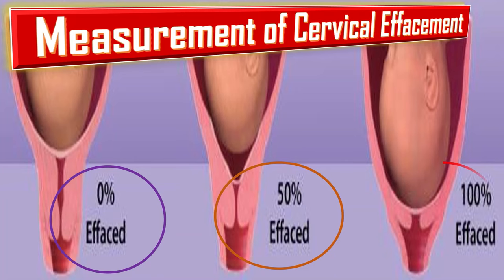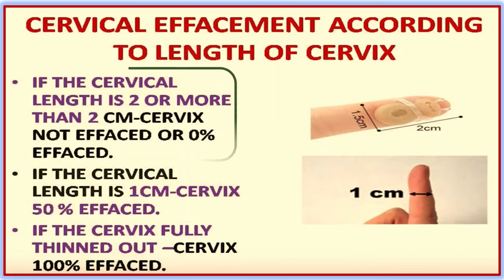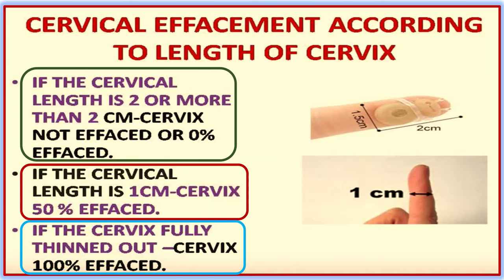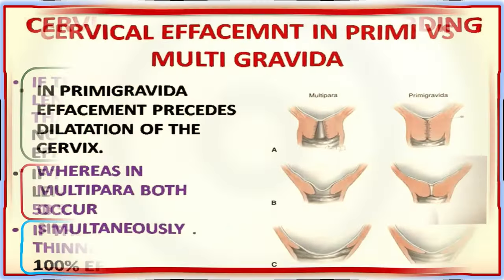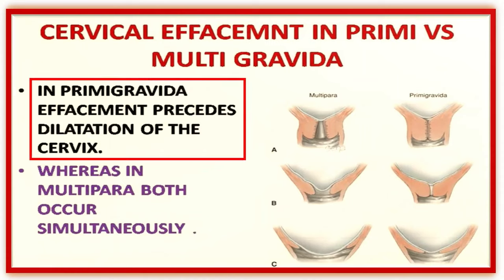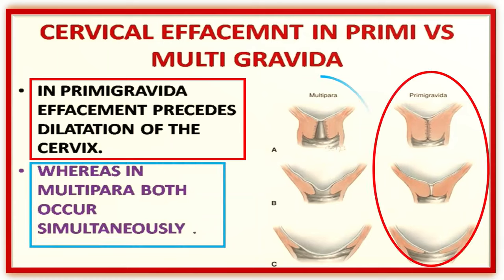Cervical effacement according to cervical length: if the cervical length is two centimeters or more, the cervix is not effaced, or zero percent effaced. If the cervical length is one centimeter, the cervix is 50% effaced. If the cervix is fully thinned out, it is 100% effaced. In primigravida, effacement precedes dilatation, whereas in multipara, both occur simultaneously.